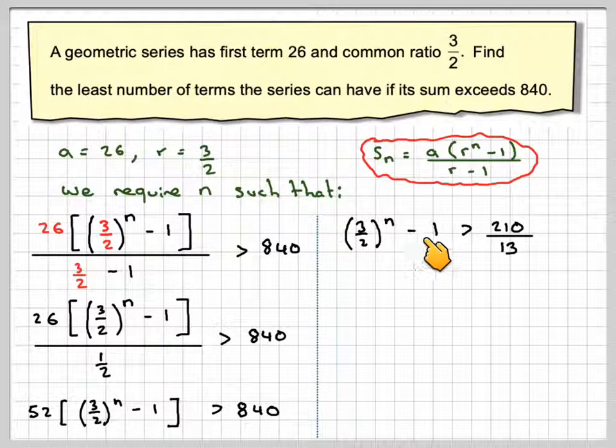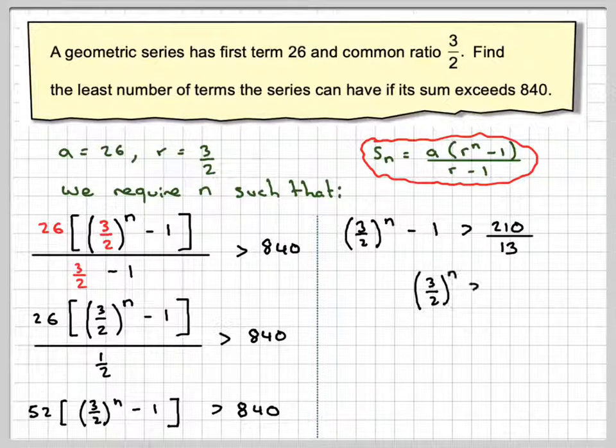Now we have to add 1. So we now get 3 over 2 to the power of n is going to be, if we add 1 to 210 over 13, we're going to get 223 over 13.